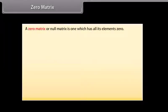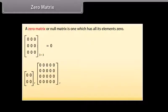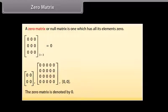A zero matrix or null matrix is one which has all its elements equal to 0. Here is a 3 by 3 zero matrix, along with three more examples of zero matrices. The zero matrix is denoted by 0.